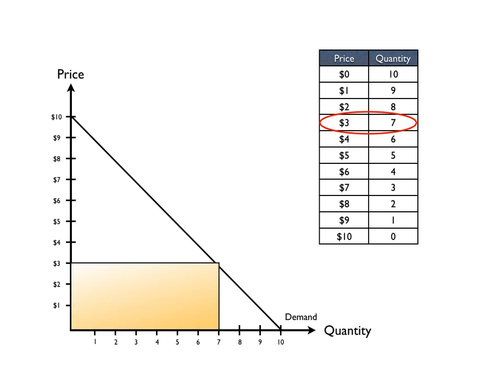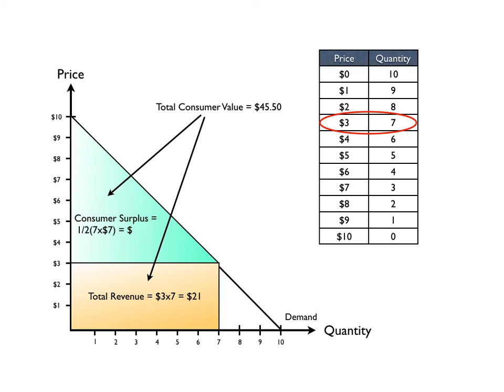And we can look at one last one. At a price of $3, consumers will buy seven of them. The total value is going to be $45.50, and that includes the total revenue of $21, which leaves $24.50 remaining as surplus.